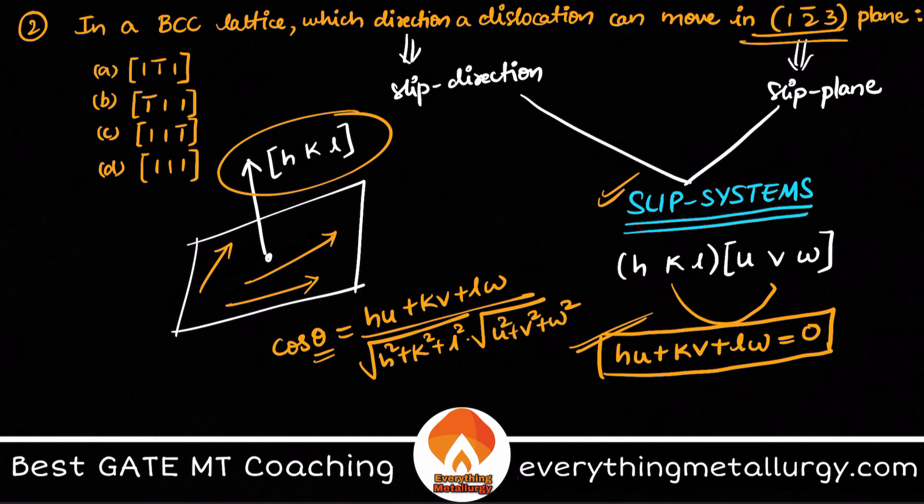So just take the same thing over here and match the options. So here you can apply: what is h for us? So h is 1 into u, plus k is minus 2 into v, plus l is 3 into w equal to zero. So we got condition of u - 2v + 3w equal to zero.